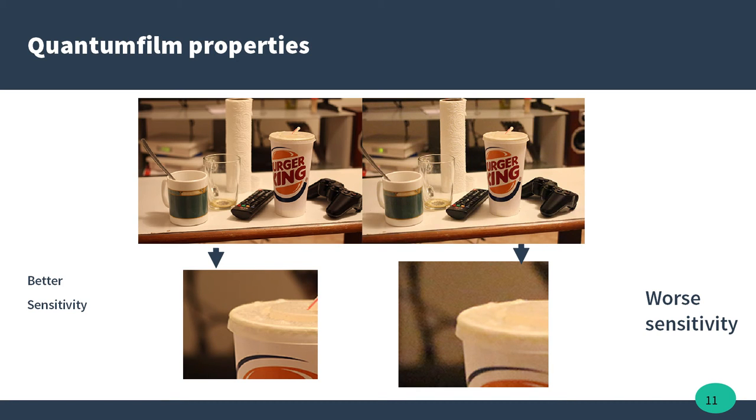Image sensor sensitivity depends on the one hand, on the size of the photosensitive area. I mean the bigger the pixel, the more photons it can collect. And on the other hand, the efficiency of the photoelectric conversion, known as quantum efficiency.